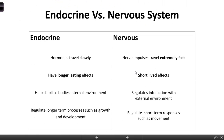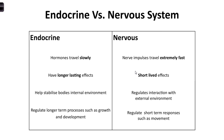Let's quickly compare the endocrine system with the nervous system. Hormones travel slowly around our body, whereas nerve impulses travel extremely fast. If I want to move my finger, it happens almost instantaneously - I think about it and it's done. Whereas with hormones, the effect is much more slow. But hormones have longer-lasting effects - the nervous system has short-lived effects, like fast responses such as moving my arm or leg.